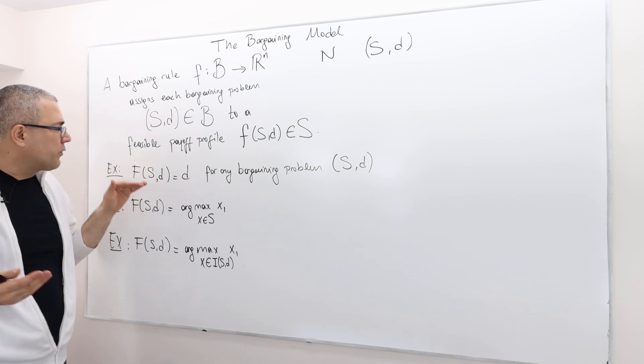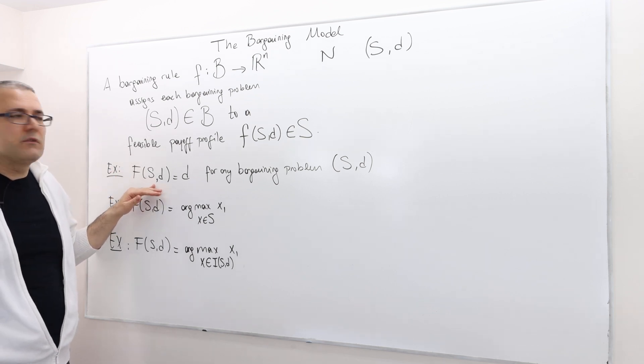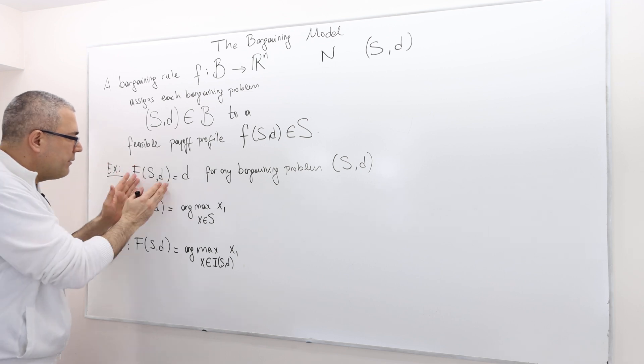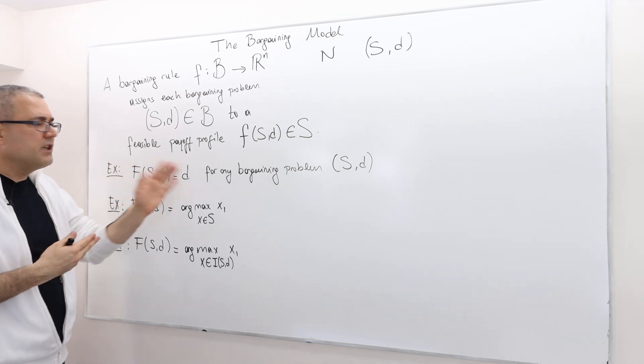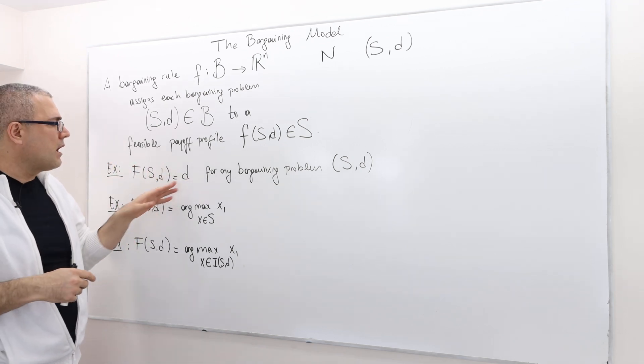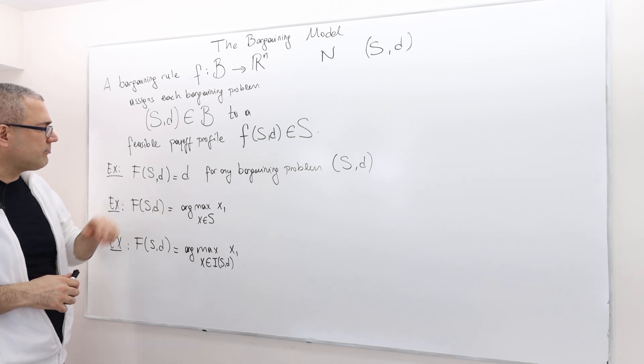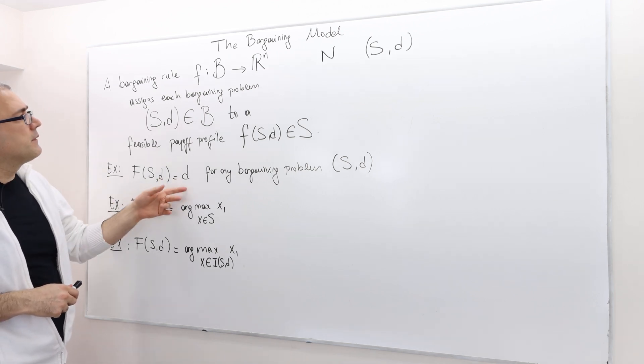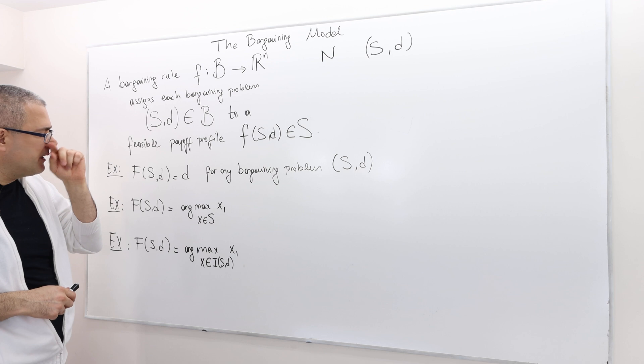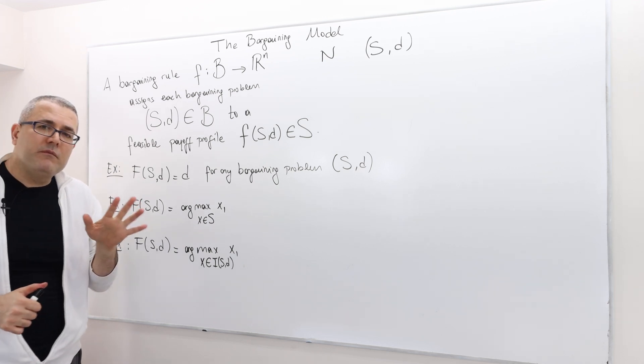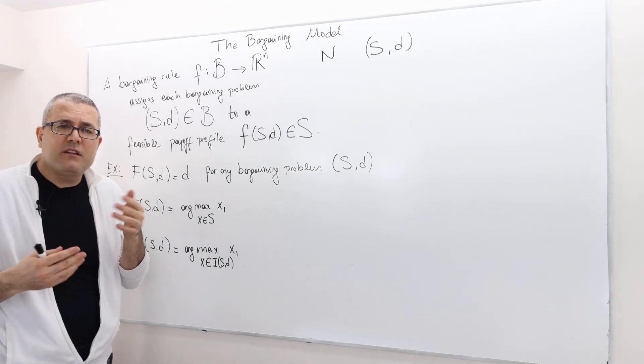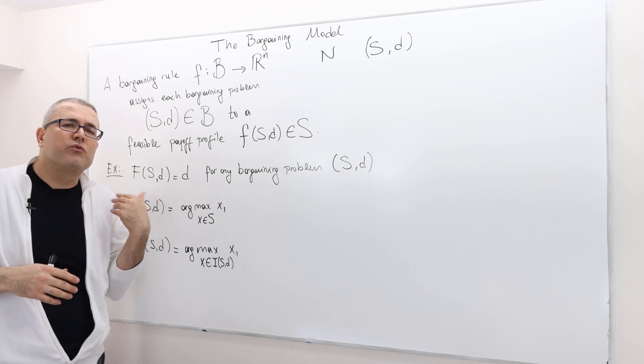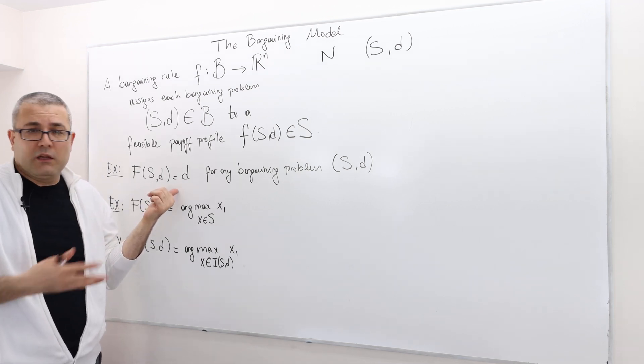This is just a rule. And it works for any bargaining problem. It is well-defined. For any bargaining problem you suggest, it just recommends the disagreement point. Now we can judge. Is this a good rule or bad rule?